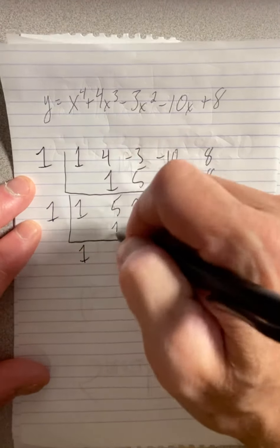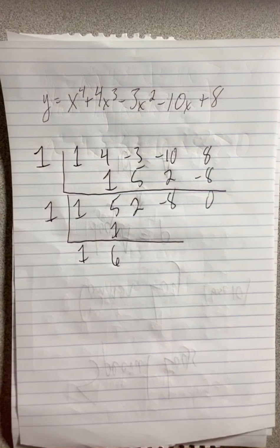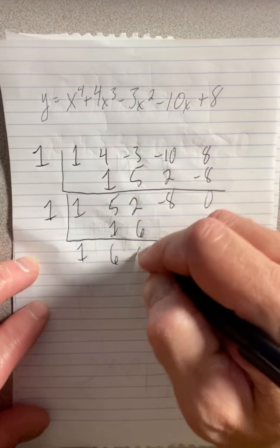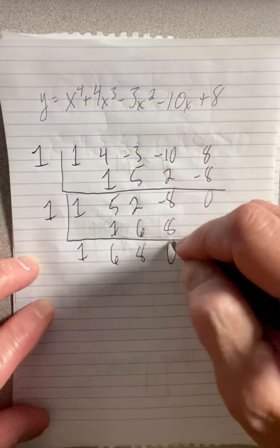One times one is one. We add here, we get six. Five and one is six. So one times six is six. So we add, we get eight. One times eight is eight. We get zero.